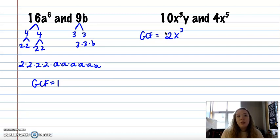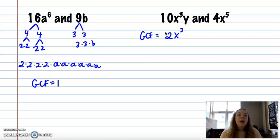If that wasn't obvious to you, go ahead and make the factor tree and expand it out. That's what you'll be left with: 2x cubed.